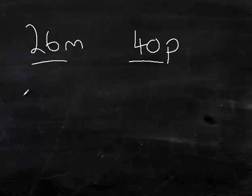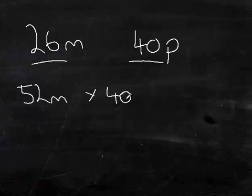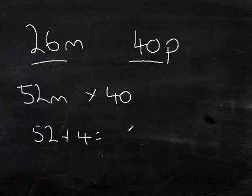So it's a return journey. So we have 26 times 2, which is 52 miles travelled, times by 40 pence per mile. So we break this down. We could do 52 times 4, which is 208.